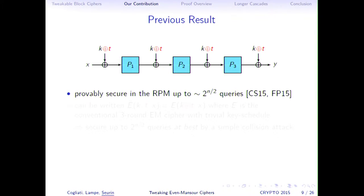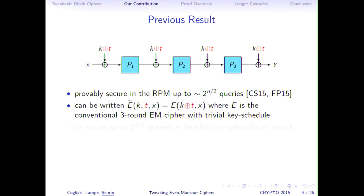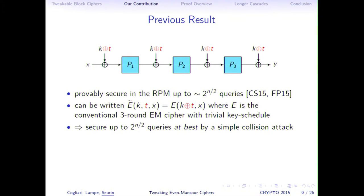There is one previous result: the construction where you absorb the key and tweak between each permutation has been proved secure up to the birthday bound for three rounds, in two recent papers — one by Cogliati and myself, and the other by Farshim and Proctor. For two rounds, this is not secure; three rounds is the minimum. However, increasing the number of rounds beyond three will not increase security, because this construction can be written as a conventional block cipher with key equal to K XOR T. Any tweakable block cipher of this form can be attacked with a simple birthday attack, so it is stuck at birthday-bound security.